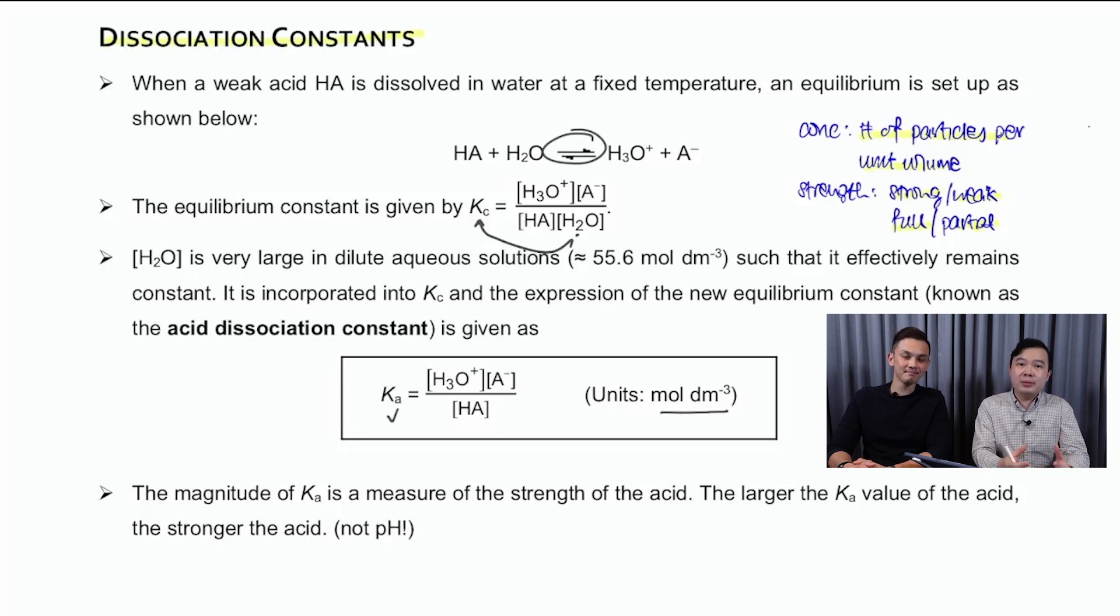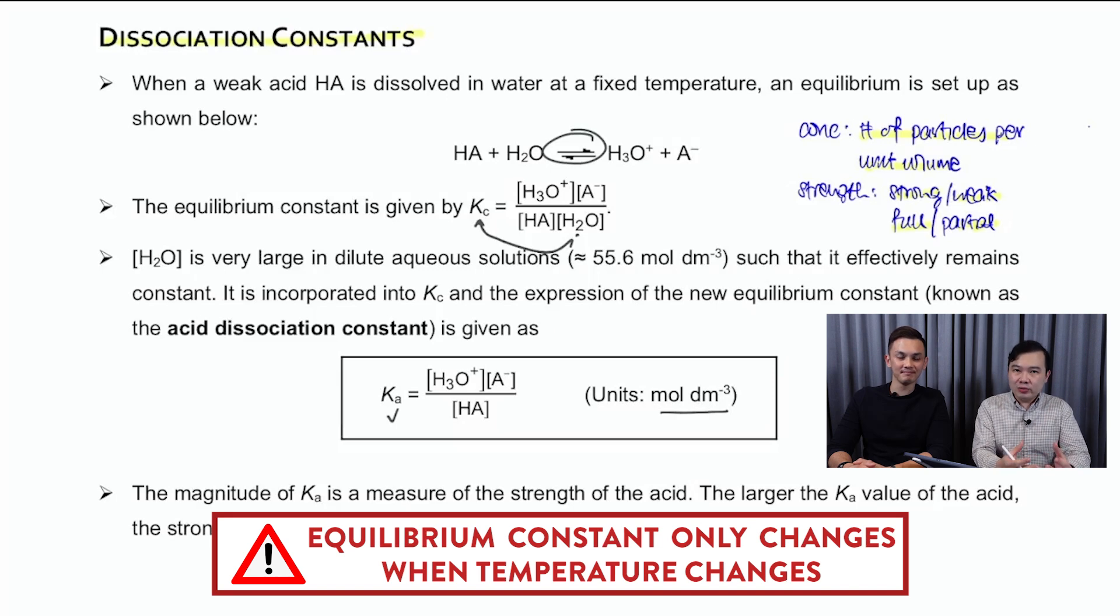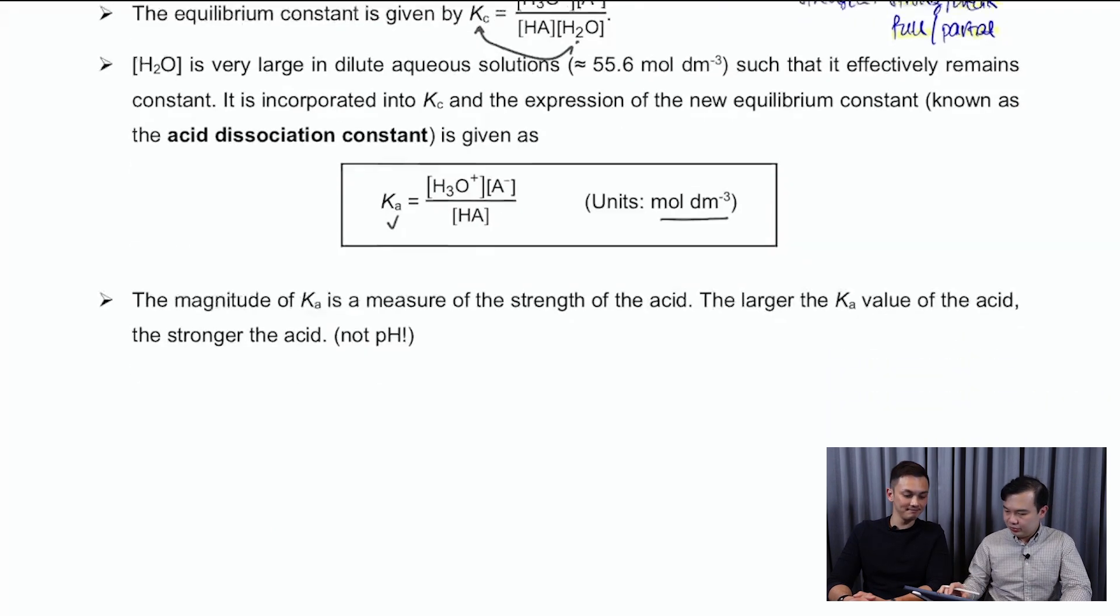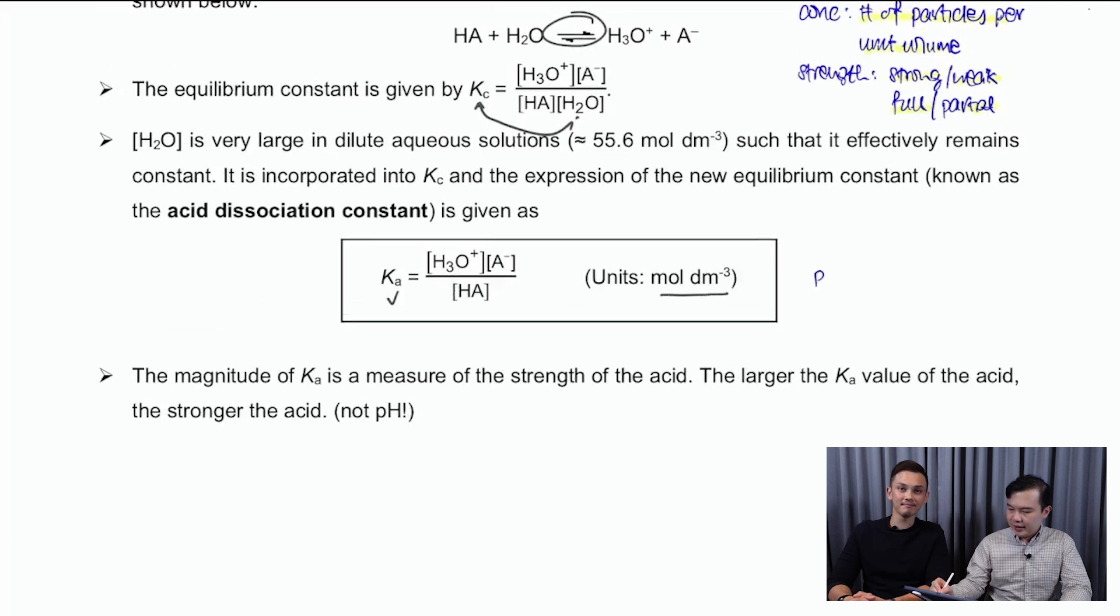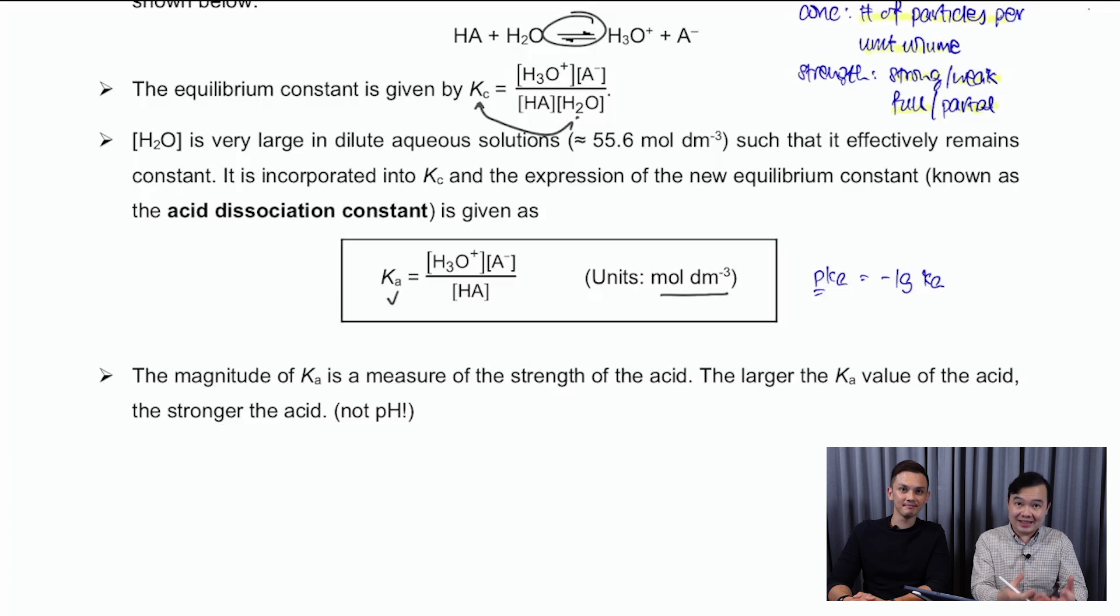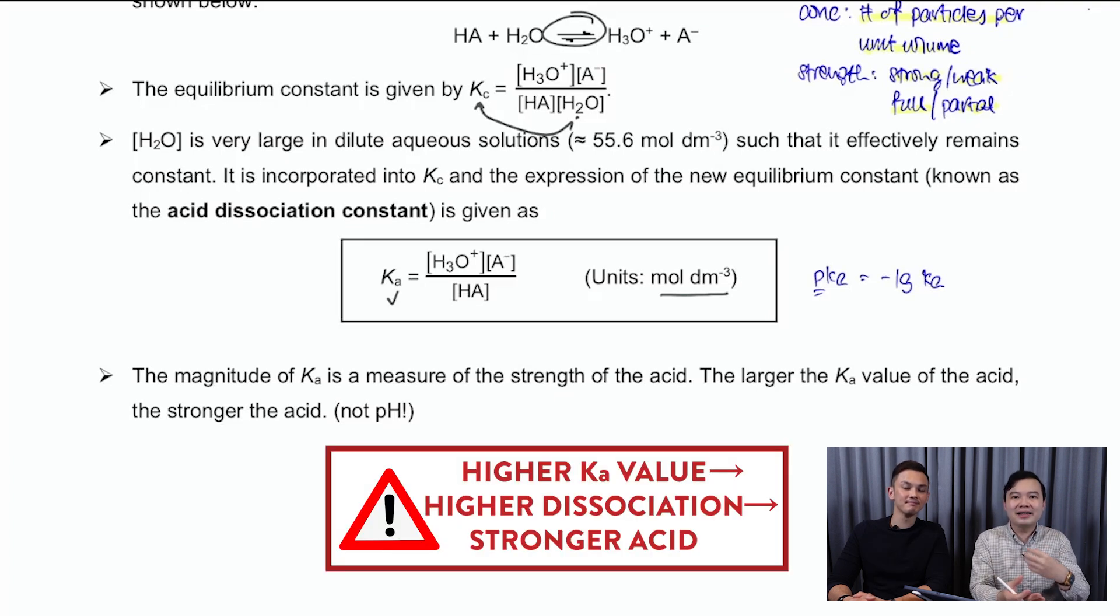We also understood that equilibrium constants can only change under one condition, only when temperature changes. Now, we also talked about the idea of a pKa. So pKa, the letter p over here is going to mean negative log base 10 of Ka. And usually because of the negative sign, we are going to see an inverse relationship between the Ka and the pKa.